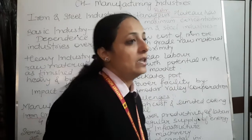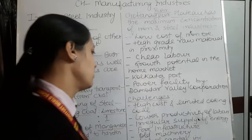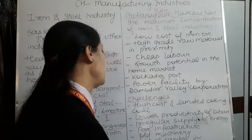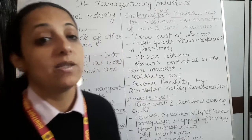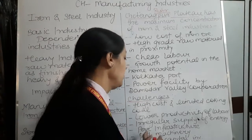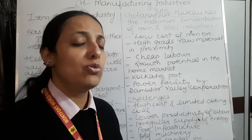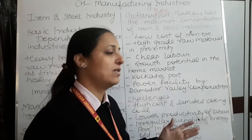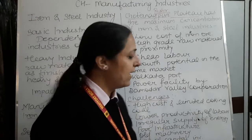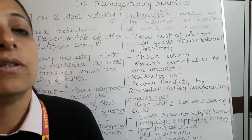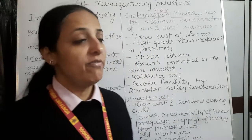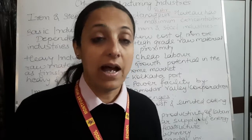Poor infrastructure is a challenge, as most states where iron and steel plants are located face infrastructure problems. Many public sector plants use old and obsolete machinery, and government upgradation is difficult due to lack of investment. Large capital investment is required to set up an integrated iron and steel plant, and there is a gestation period of 3-4 years before production actually begins.